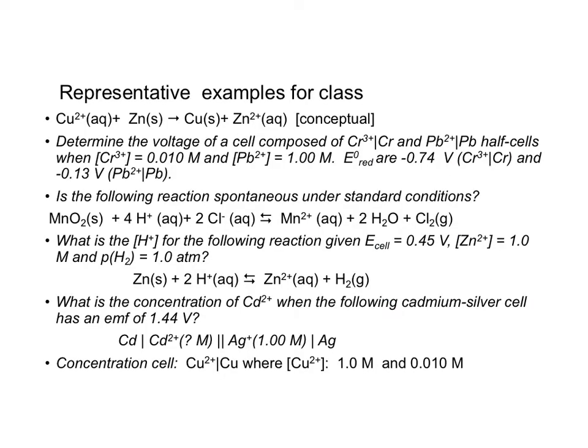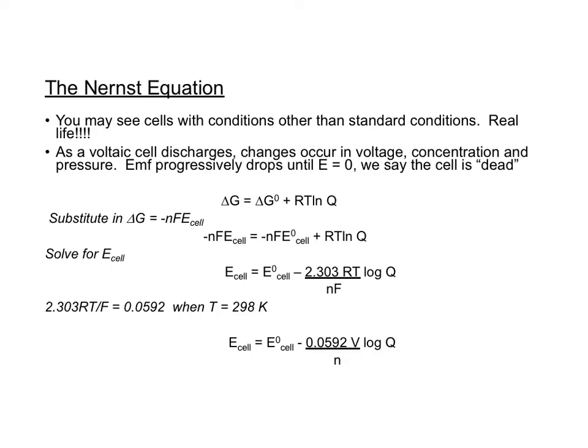In this section we have a number of examples to do. The first one is conceptual, the other ones are mathematical. Here we first want to talk about the Nernst equation because to be brutally honest, you may see cells in conditions other than standard conditions, and that is real life. That is like someone's heart.